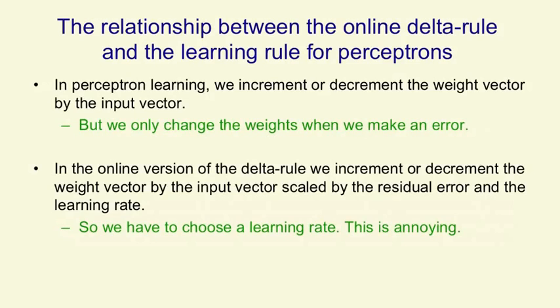There's an interesting relationship between the delta rule and the learning rule for perceptrons. So if you use the online version of the delta rule, where we change the weights after each training case, it's quite similar to the perceptron learning rule. In perceptron learning, we increment or decrement the weight vector by the input vector, but we only change the input vector when we make an error. In the online version of the delta rule, we increment or decrement the weight vector by the input vector, but we scale that by both the residual error and the learning rate. And one annoying thing about this is we have to choose a learning rate. If we choose a learning rate that's too big, the system will be unstable. And if we choose a learning rate that's too small, it'll take an unnecessarily long time to learn a sensible set of weights.